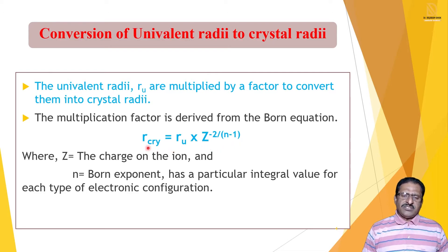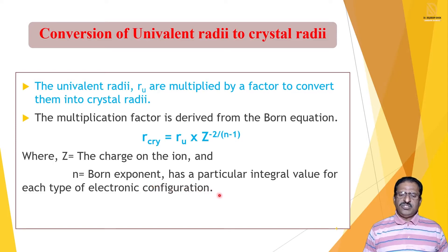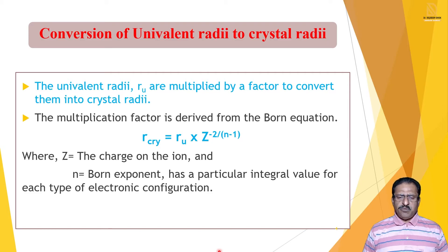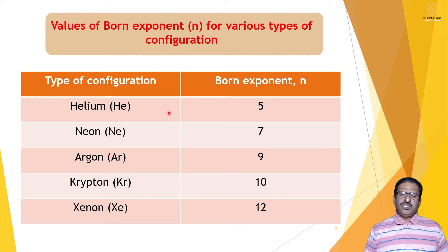Here R crystal means the crystal radius, R_U means the radius of the univalent compound or univalent ion, Z means the charge on the ion, and small n is the Born exponent. The Born exponent is a constant with particular integral values for each type of electronic configuration. We now see the values of the Born exponent, which are constant values for various electronic or inert gas configurations.